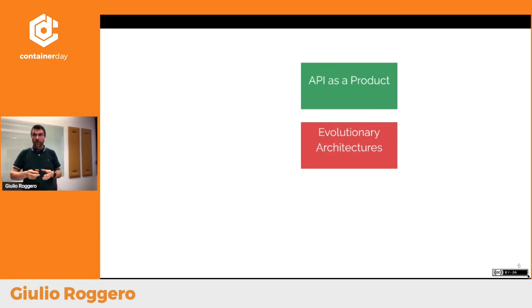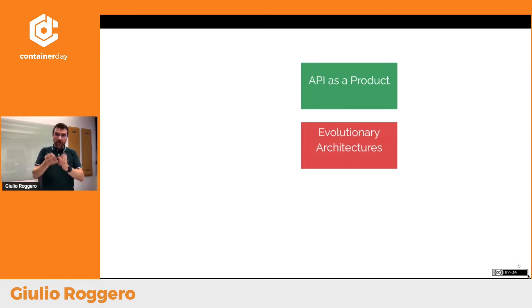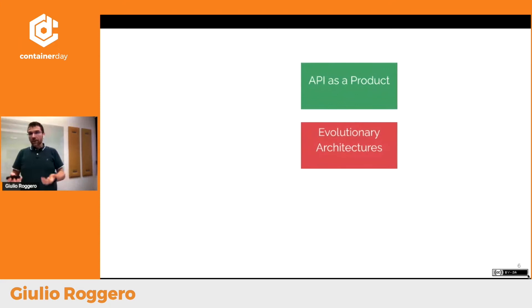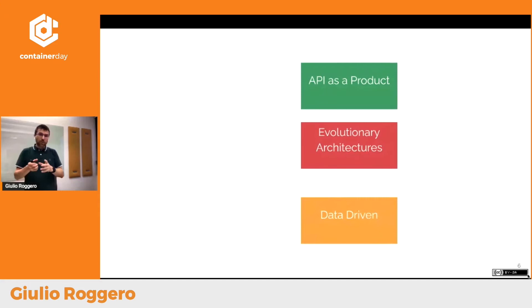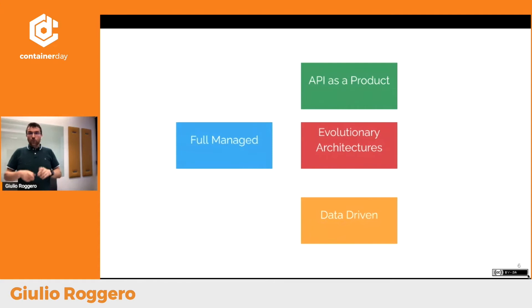Il secondo punto è pensare a un'architettura che evolva nel tempo e non a un'architettura definitiva target. Quando si parla di architetture target c'è il rischio di pensare a qualcosa di statico. Un pilastro importante è pensare ad architetture che by design debbano evolvere. Il terzo punto è che i dati sono al centro, sempre aggiornati in tempo reale, non solo per analisi ma per dare al consumatore un dato che lo rappresenta. Voi mi direte: ma cosa c'entrano questi quattro aspetti con Kubernetes?